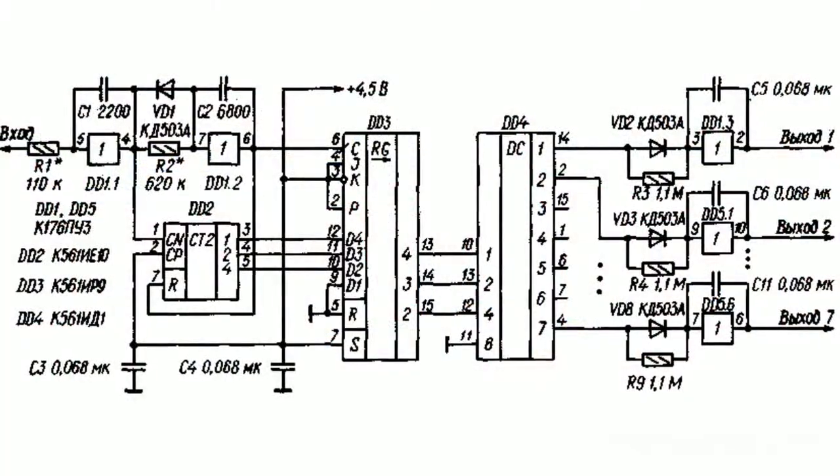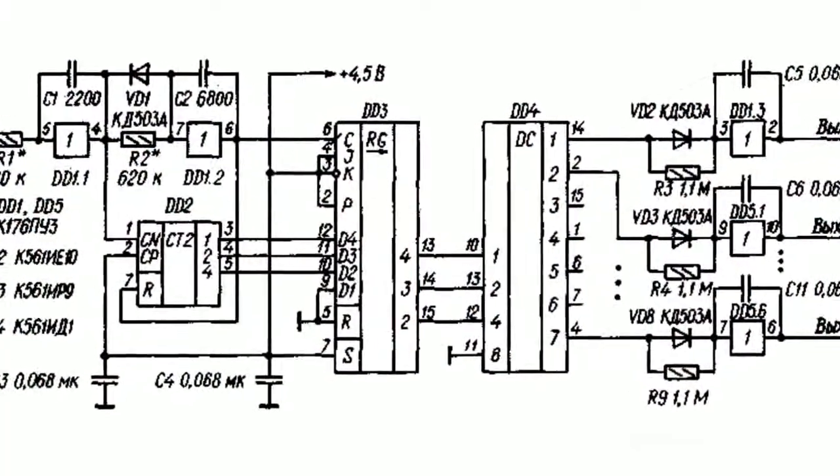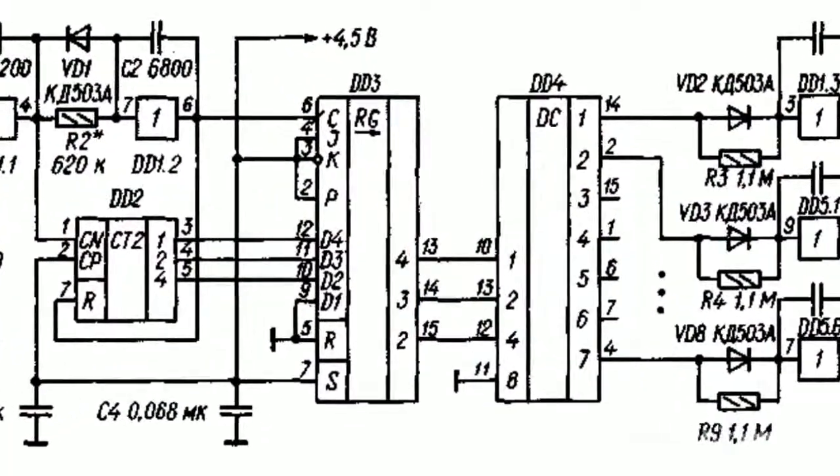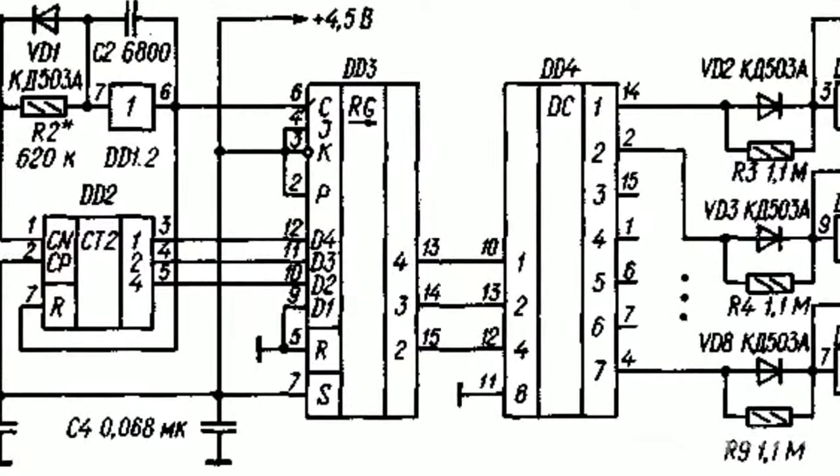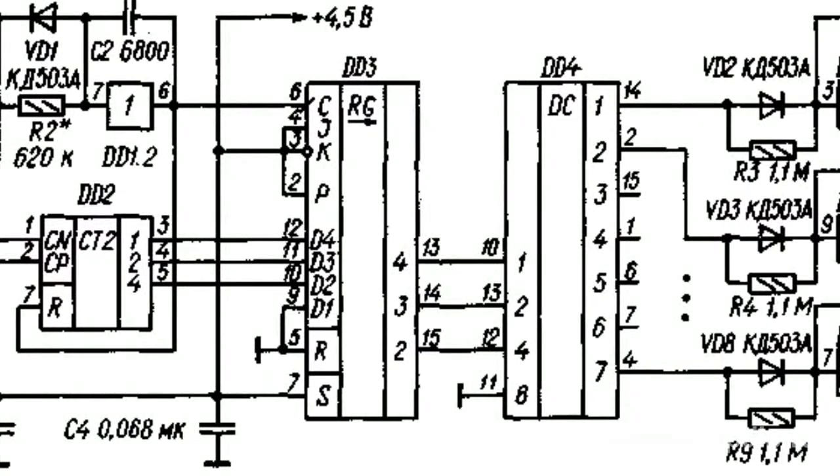Regenerative forming devices with positive feedback allow receiving both individual pulses and their sequences. Such devices are triggers, multivibrator oscillators, blocking and ramp generators.